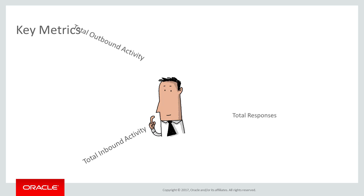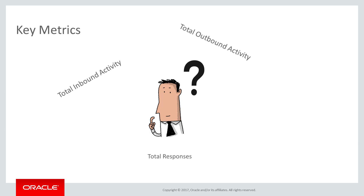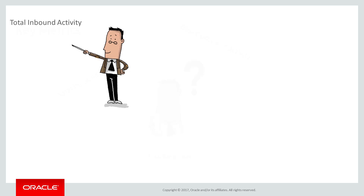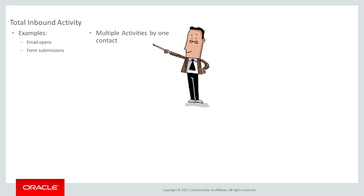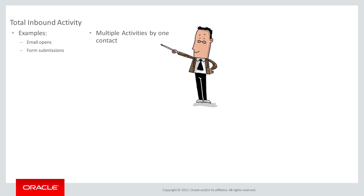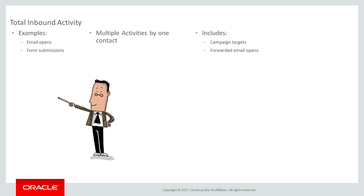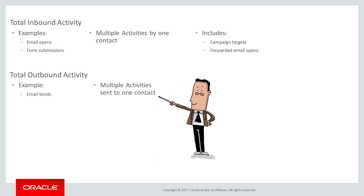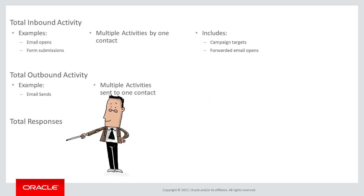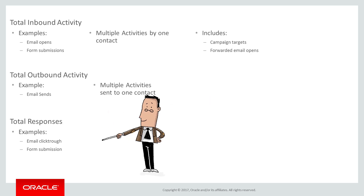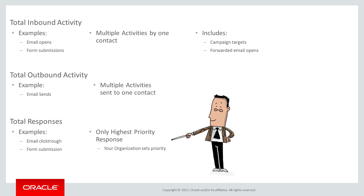Let's try to avoid confusion — these three metrics keep coming up, but just what do they mean? Total inbound activity counts the total amount of inbound activity. When multiple forms of activity are performed by a single contact, all are counted towards the total. The activity by contacts not initially in the campaign, such as a forwarded email, counts as well. Total outbound activity is the total amount of outbound activity that occurs, including multiple forms of activity directed towards a single contact. Total responses counts the number of highest priority responses that occur. Eloqua only records the highest priority responses as determined by your organization's response rules. It is up to your organization to determine which response has the highest priority.